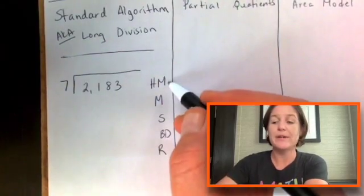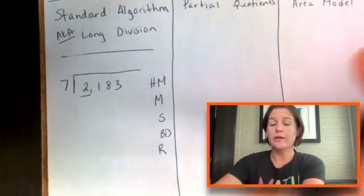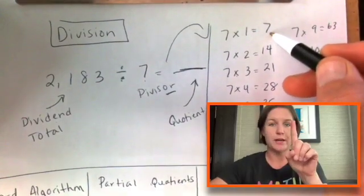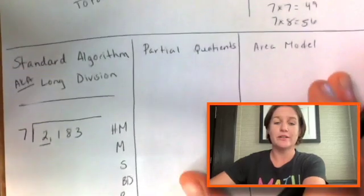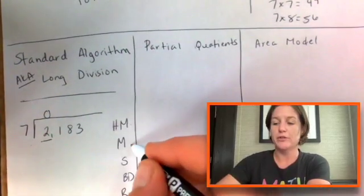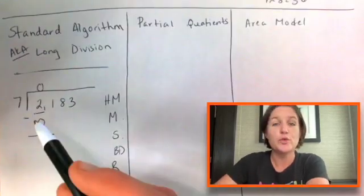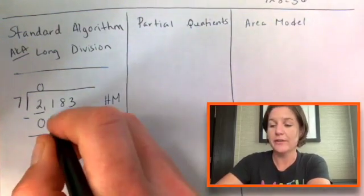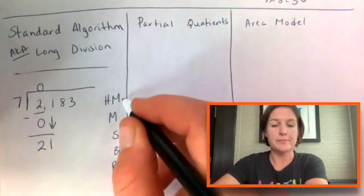So we have how many, how many sevens does it take to get as close as we can to two? Well, if we look up here, our first seven, which would be times one is seven, which is greater than two. So it's going to be zero times for that one. Multiply zero times seven is zero. Subtract two minus zero is two. And then bring down the next digit, which is one. Repeat. We're going to start at the top.